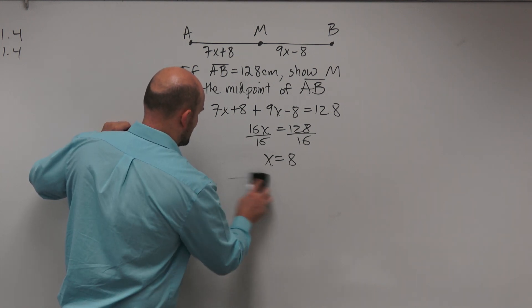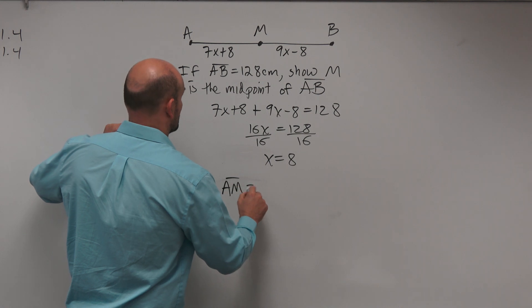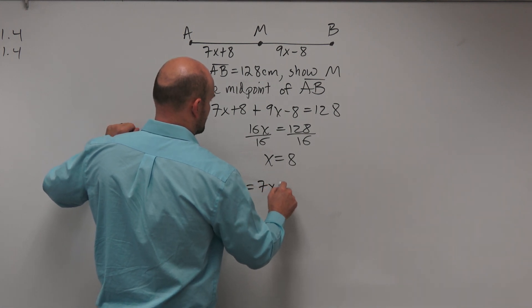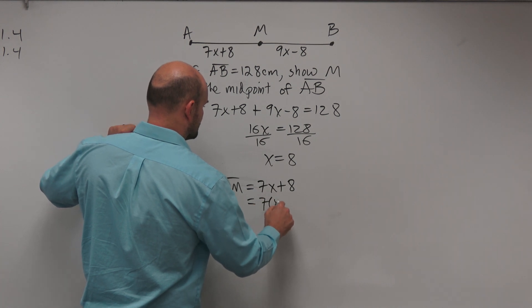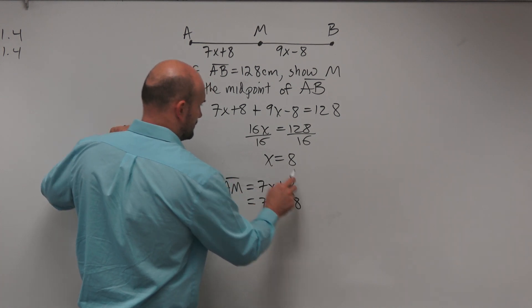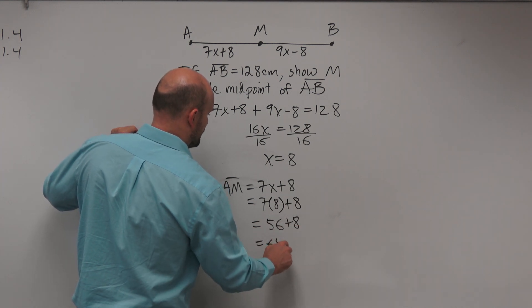To do that, let's find the length of AM. AM equals 7x plus 8. Plugging in 8: 7 times 8 plus 8 equals 56 plus 8, which is 64.